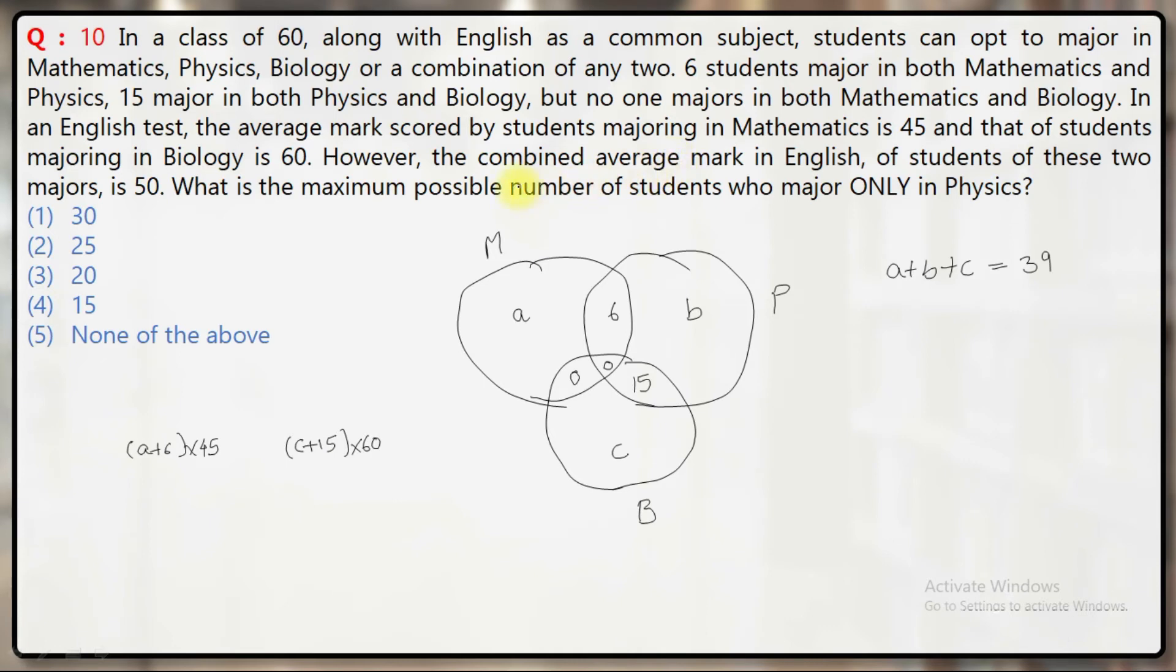The combined average mark in English of students of these two majors is 50. That means the average of these two: (a+6) times 45 plus (c+15) times 60, divided by (a+6) plus (c+15), equals 50. You get a new equation in terms of a and c.